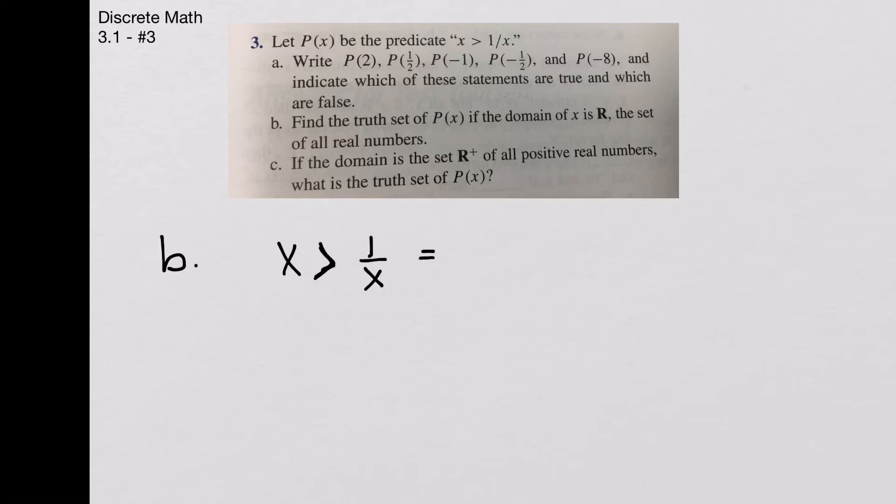Just keep in mind, as you learned in college algebra or whatever algebra class you've had before, that we can't multiply both sides by x here, so I do have to subtract 1 over x from both sides, so that I get x minus 1 over x is greater than 0.